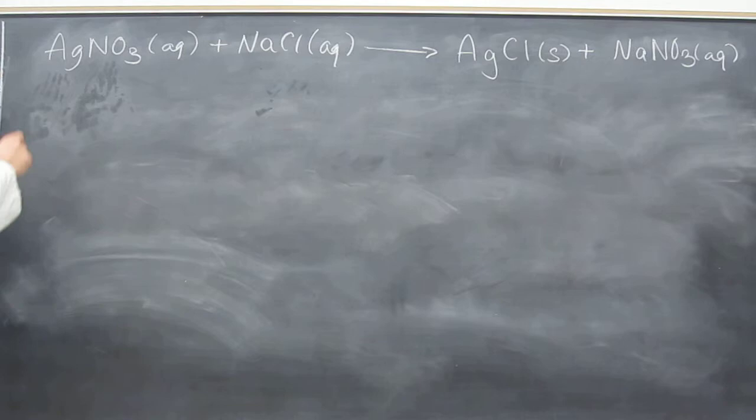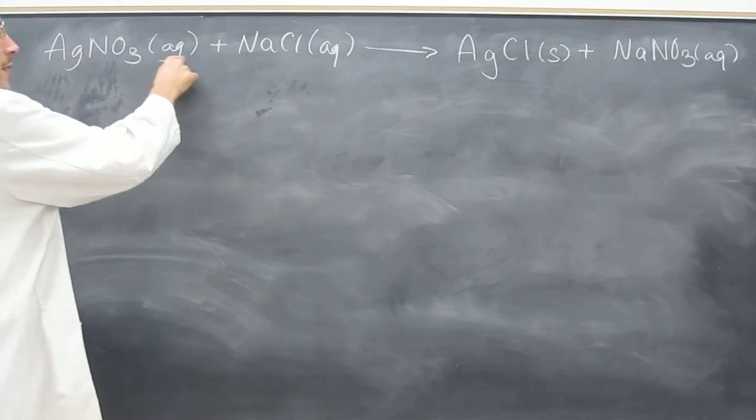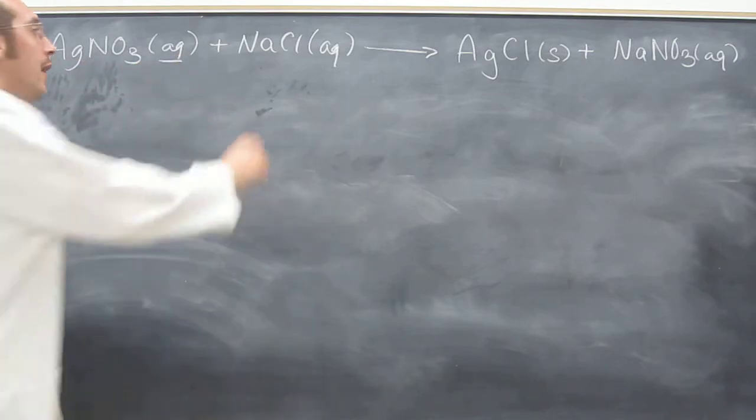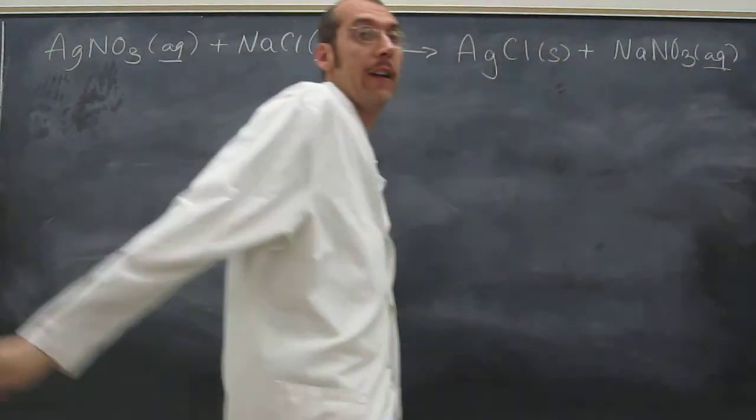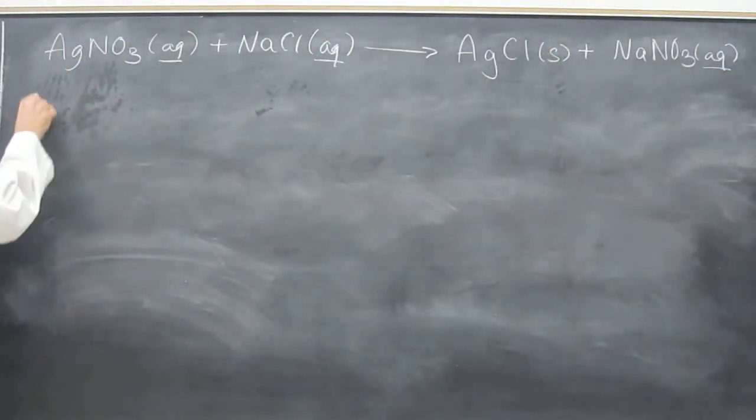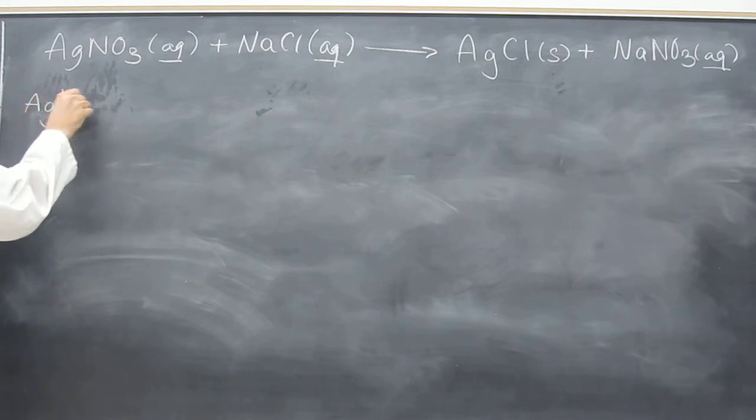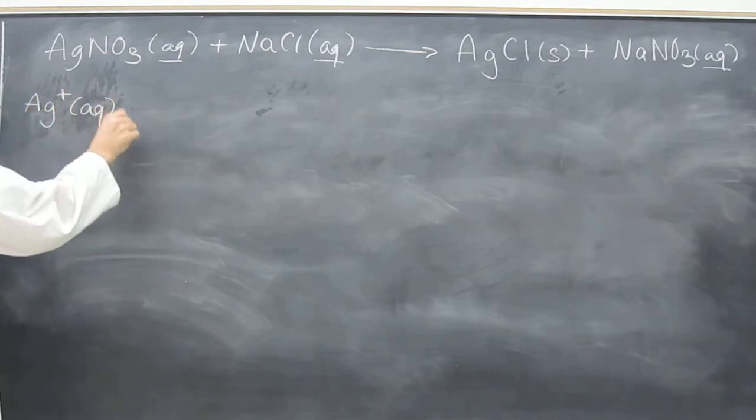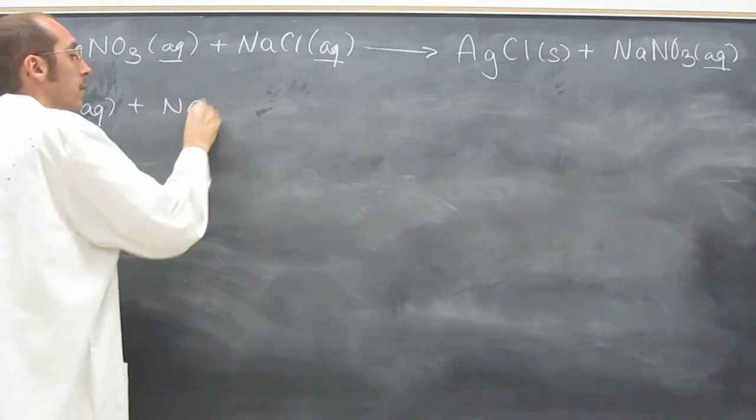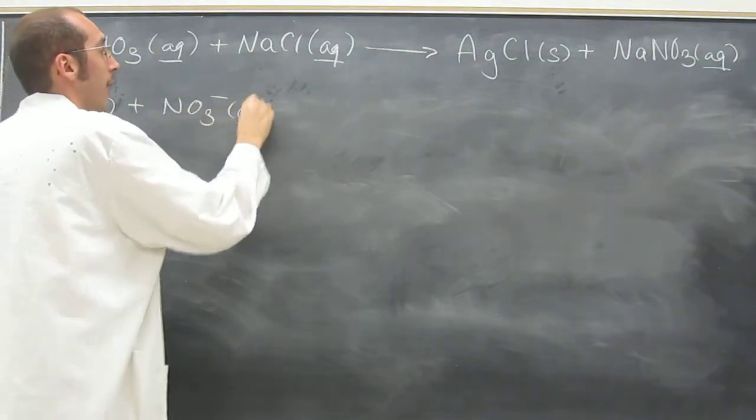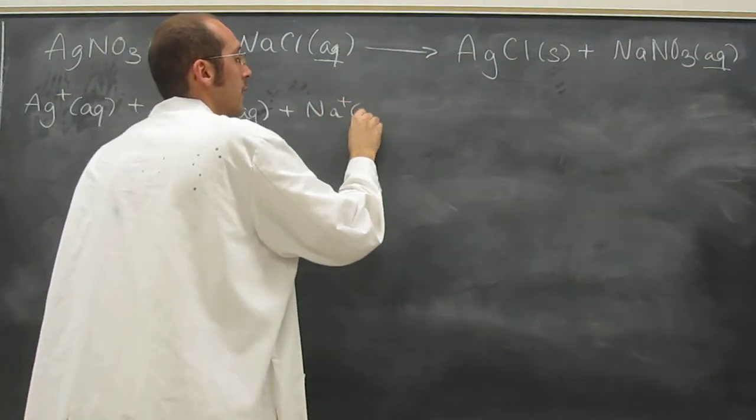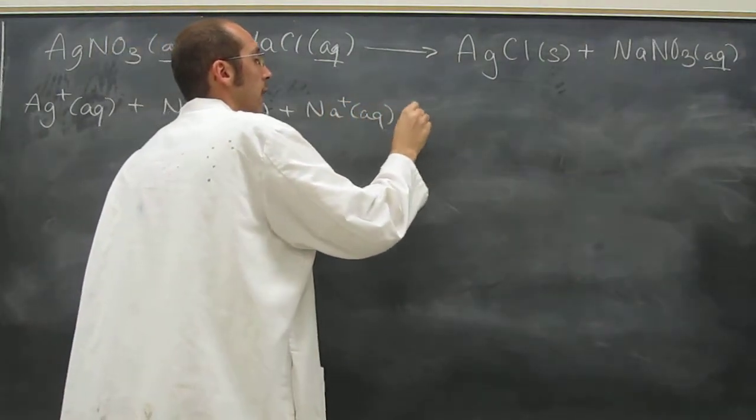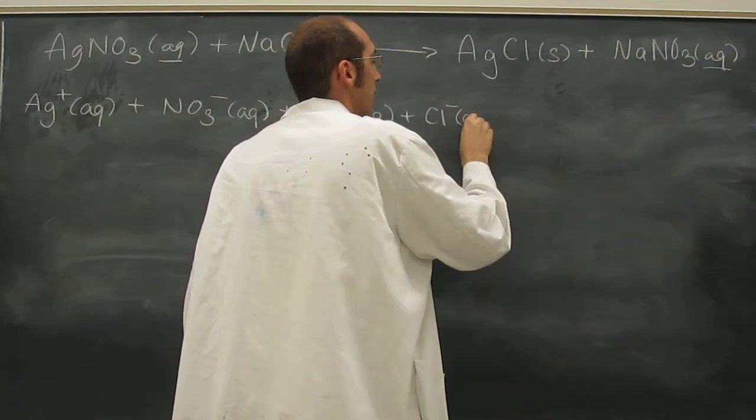The total ionic equation is you break everything up that's aqueous into its ions. So that, not that, but that, right? So Ag plus, you gotta keep state of matter on there. NO3 minus, state of matter. Na plus, state of matter, aqueous. Cl minus, aqueous.